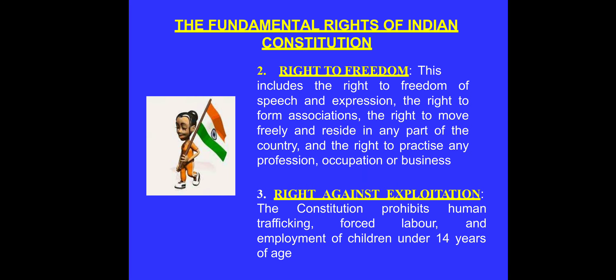The right to freedom includes freedom of speech and expression, freedom to form an association, and freedom to move freely and reside in any part of the country. You can live in Jammu, Assam, Kerala — any part — and practice any profession, occupation, or business.